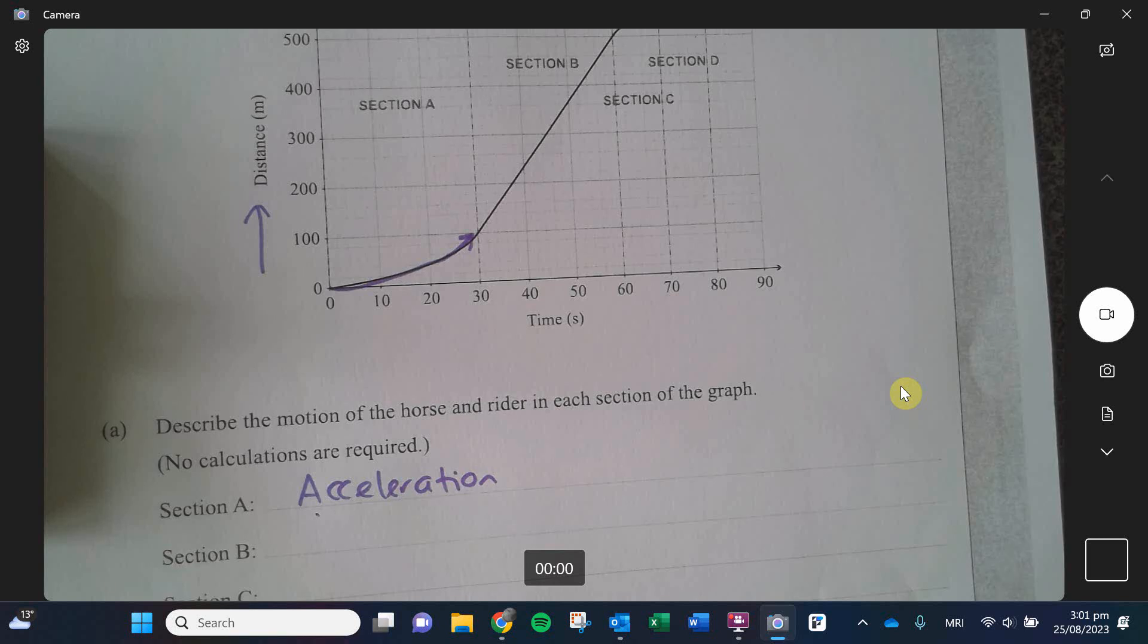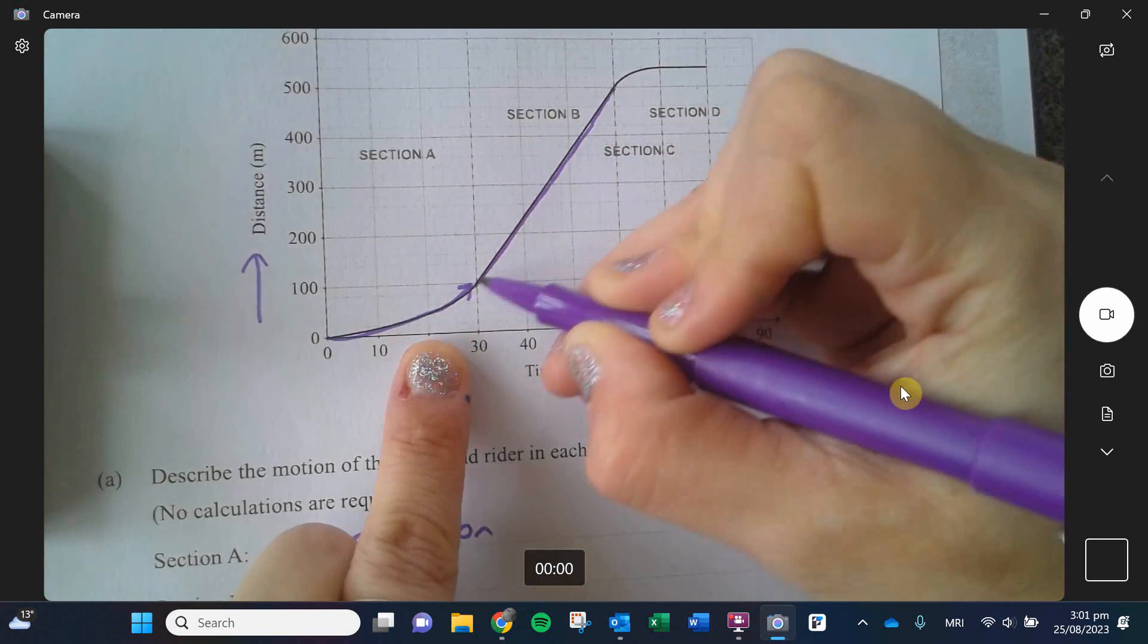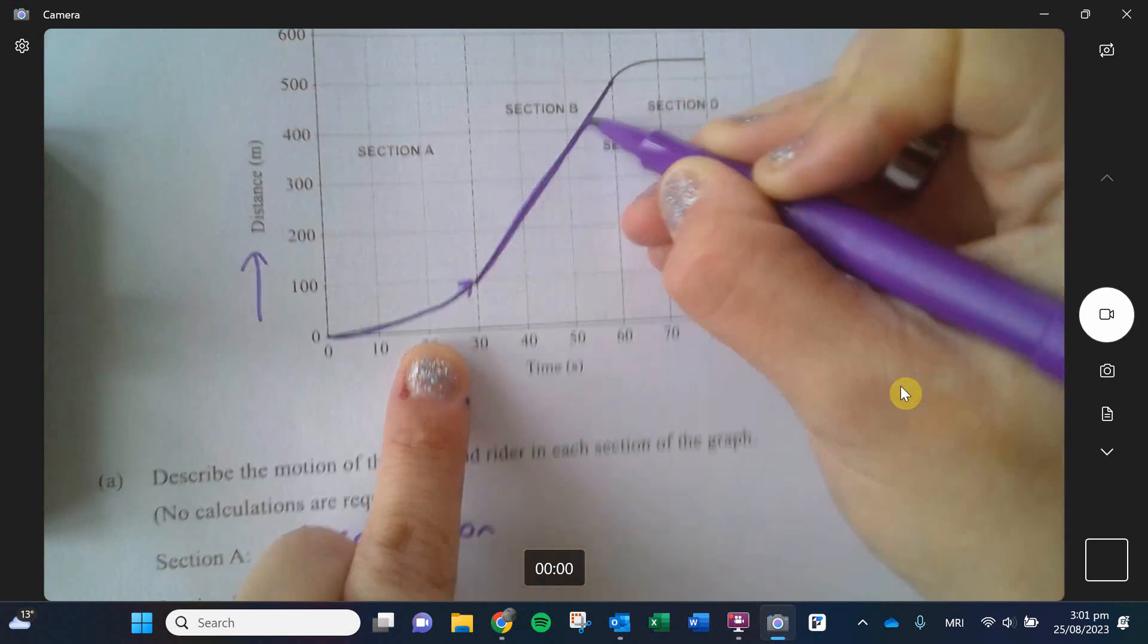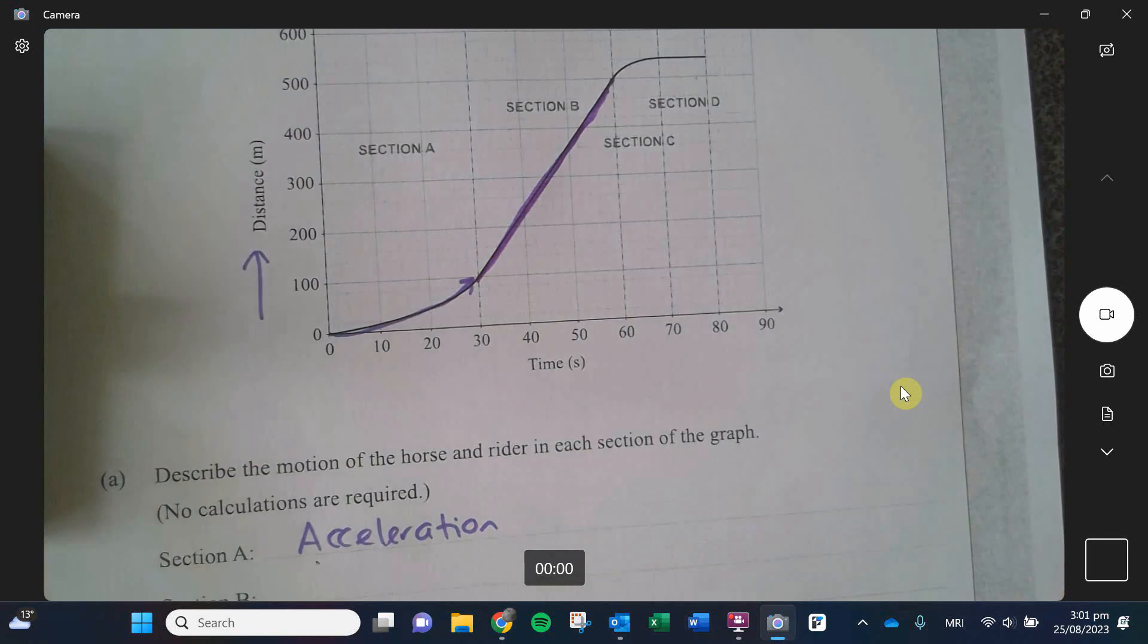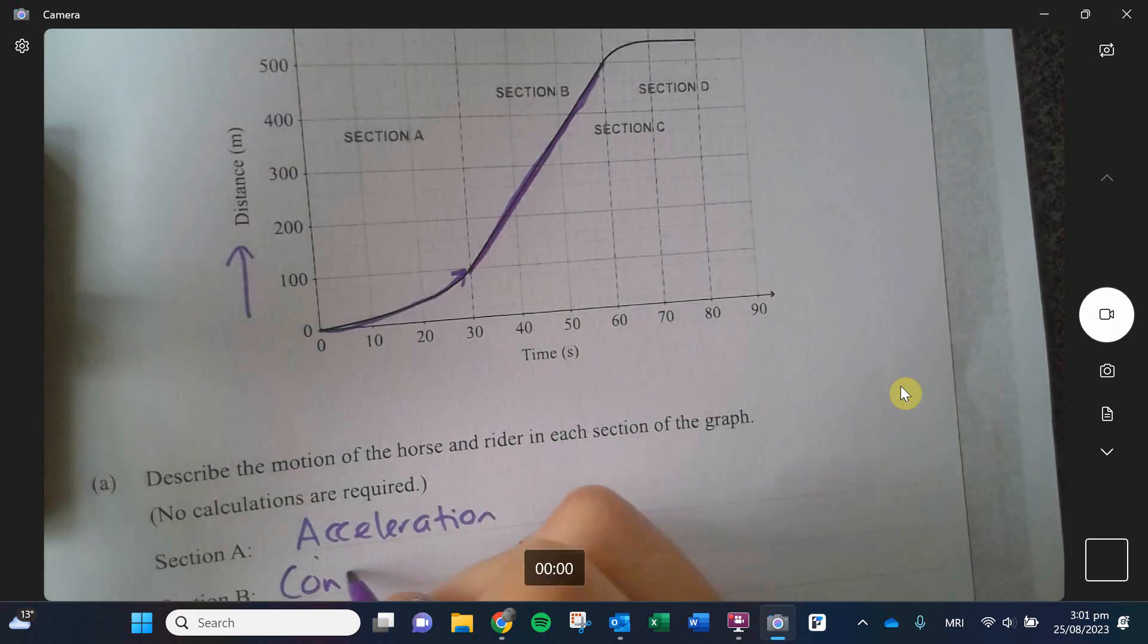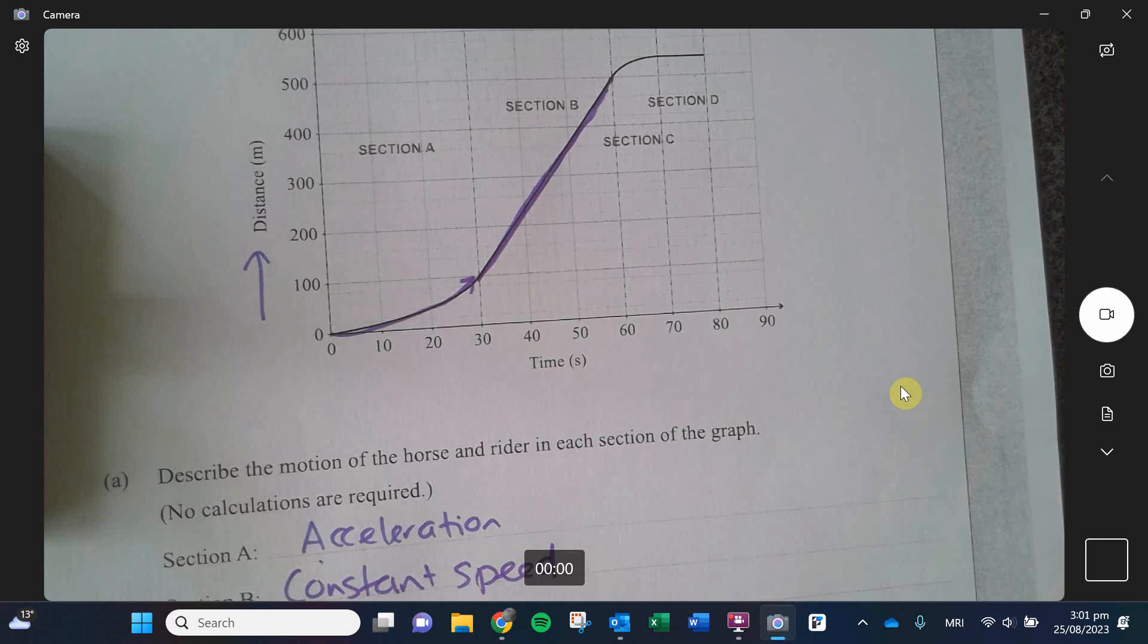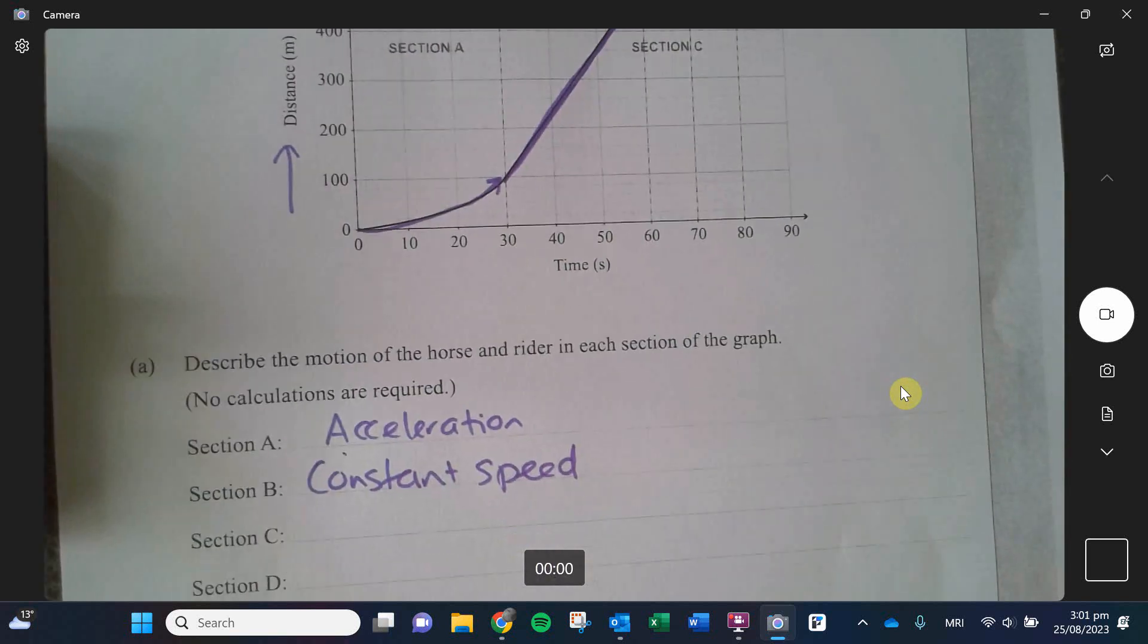Next thing is section B. I notice here that this is a nice linear upward line. So what that tells me is that as time is passing, I am traveling the same distance. So if I'm traveling a consistent distance over time, I am traveling at a constant speed.